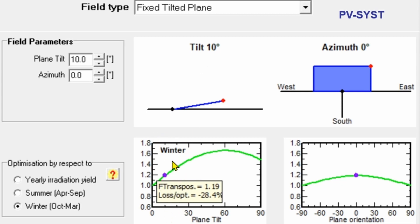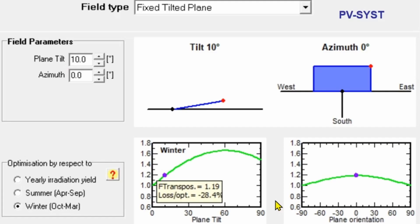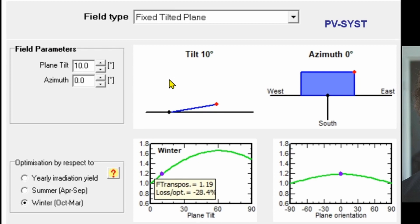Looking at the optimization output: at 10° tilt we lose about 28.4% in winter compared to the optimal 60° tilt. Over the whole year the loss is only 8%. For plane orientation, south is quite good. Comparing elevation angles, 30° is the standard elevation for maximum annual yield — at 30° there is an 8% gain over 10° for yearly energy.